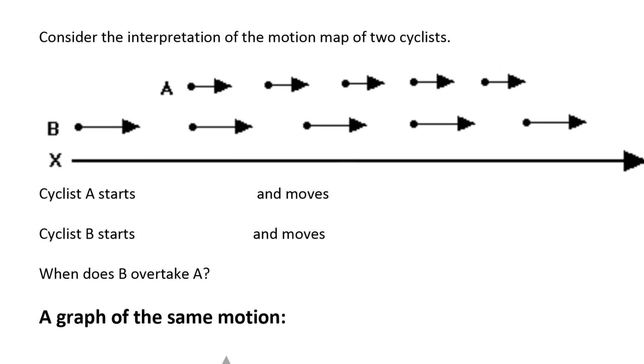Consider the interpretation of the motion map of two cyclists. This is something new. I have Cyclist A, here's Cyclist A, and I have Cyclist B. So there's Cyclist B. I've got two different cyclists going on here.